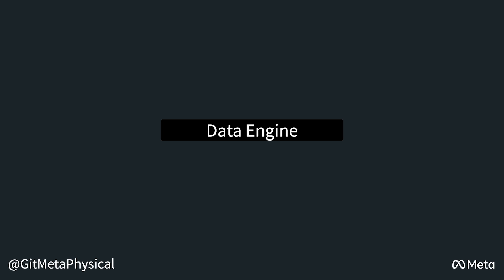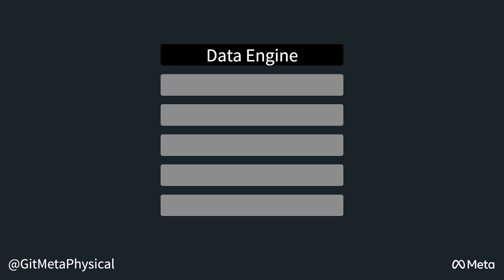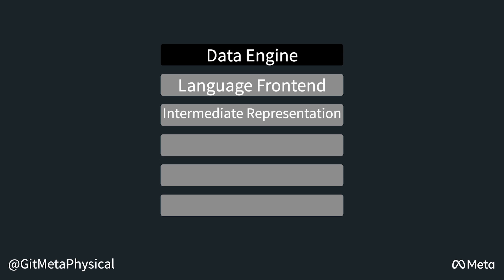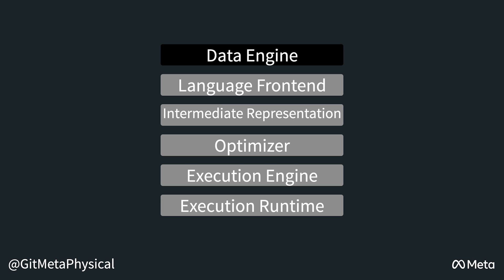Typical data engines consist of five key components: a language front end, an intermediate representation layer, an optimizer, an execution engine, and an execution runtime.